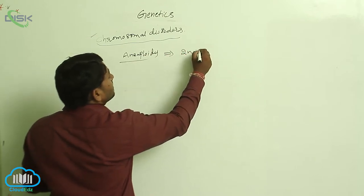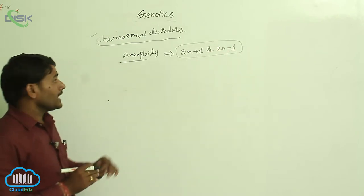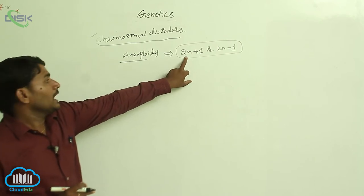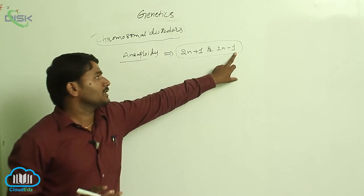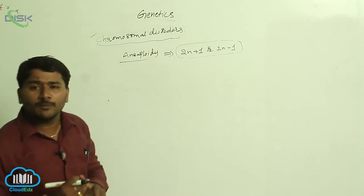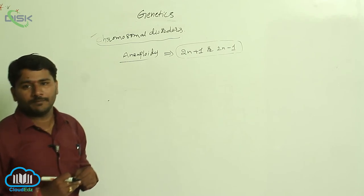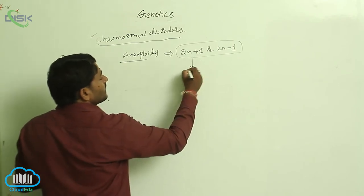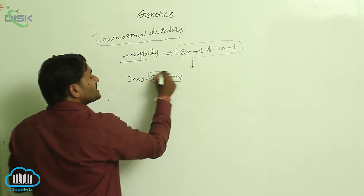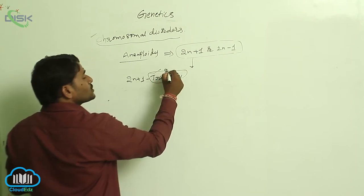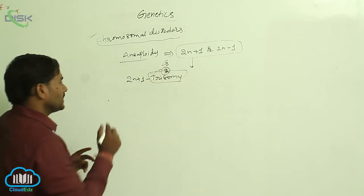Aneuploidy refers to the situation of 2n+1 or 2n-1. We normally have two sets of chromosomes; if one extra chromosome is added, that is aneuploidy. If one extra chromosome is present — meaning 2n+1 status — it is called trisomy, because tri means three: instead of a pair of two chromosomes, it becomes three.